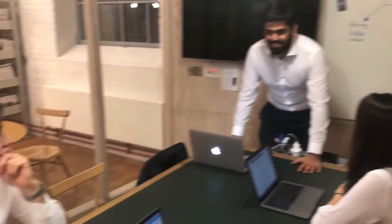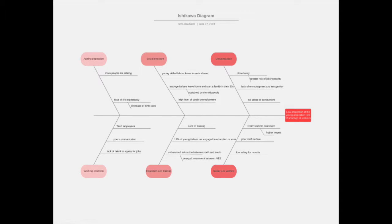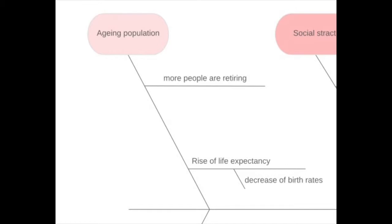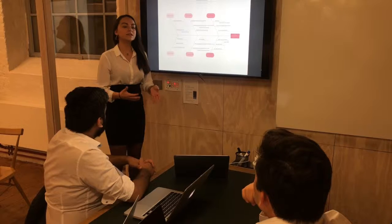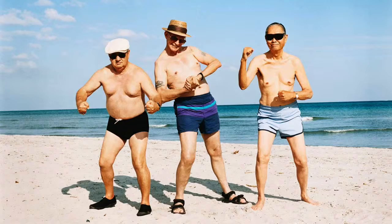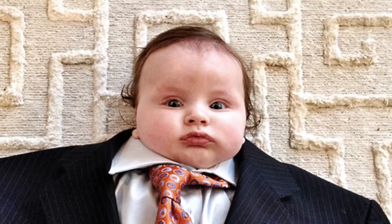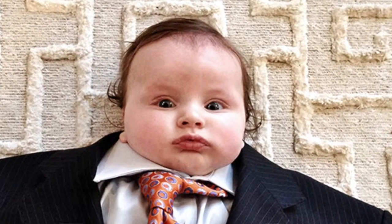Get cracking and find a solution. I created an Ishikawa diagram to understand the problem and all its main reasons and causes. Italy has an aging population that is currently rising, which means that skilled labor is mass retiring, leading to the creation of this generational gap.